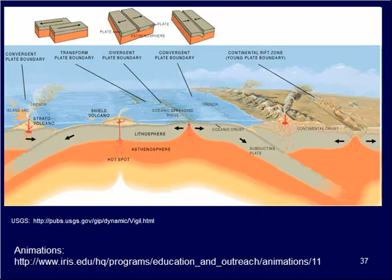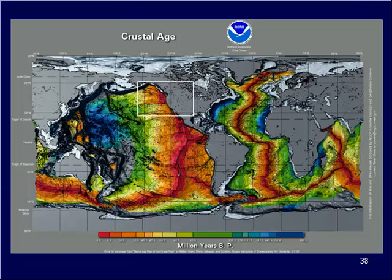When we see convergent plate boundaries, that's where one plate is usually being forced below another, and we end up seeing trenches that can be pretty deep in some locations. Where our plates are pulling apart, we have a break in the crust, magma rising to the surface, and we end up with what's called a mid-ocean ridge. We tend to see volcanoes spread along that ridge. Moving from the center of that ridge outward, the age of the crust tends to be mirror images of each other on both sides.